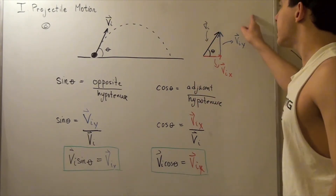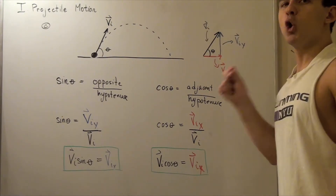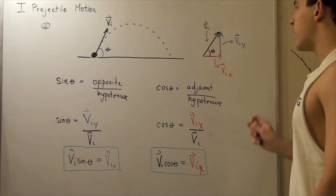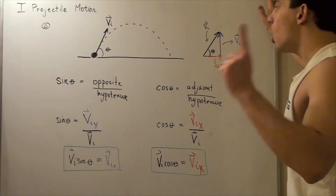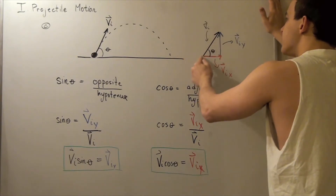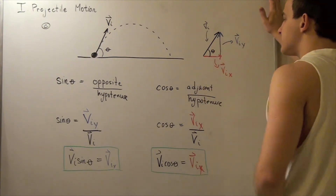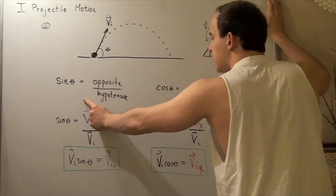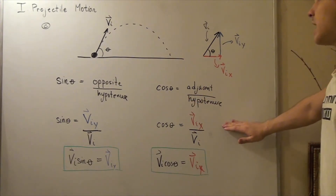Because we have a right triangle, we can use our trigonometric functions to find the magnitude of the x-component vector as well as the y-component vector, knowing the angle and the magnitude of our initial velocity vector. If we know the hypotenuse and the angle, we can find both sides. Remember that sine of angle theta equals opposite divided by hypotenuse, and cosine of the same angle equals adjacent divided by hypotenuse.